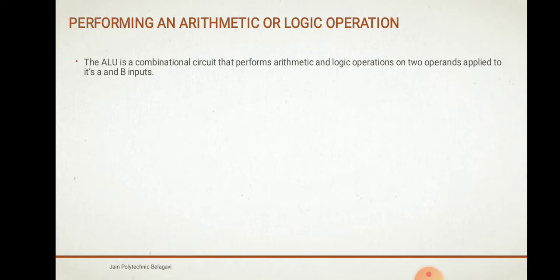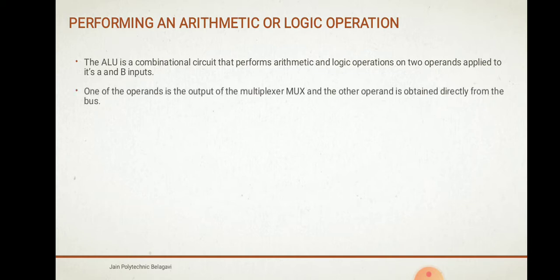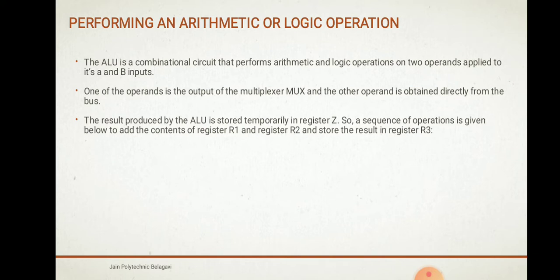The ALU is a conventional circuit that performs arithmetic and logic operations on two operands, which are applied to its A and B inputs. One of the operands is the output of the multiplexer MUX, and the other operand is obtained directly from the bus. The result of the arithmetic logical unit is stored temporarily in register Z.